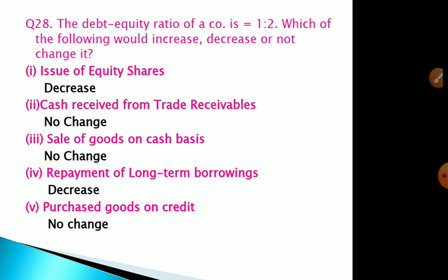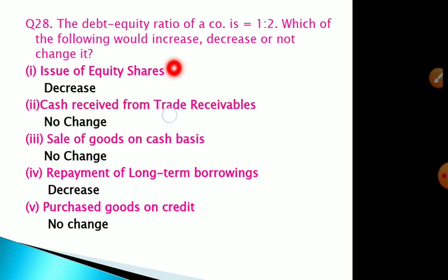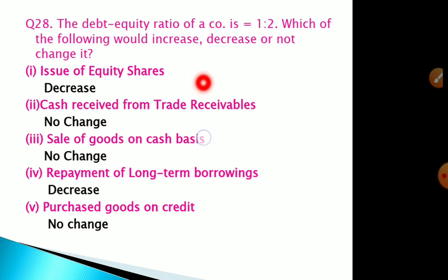Question number 28: the debt equity ratio of a company is 1:2. Which of the following transactions would increase, decrease, or not change it? We can assume debt as 10,000 and equity as 20,000. First transaction: issue of equity shares. This increases equity, which is the denominator in the formula, while the numerator (debt) stays the same. When the denominator increases and the numerator stays the same, the ratio will decrease.